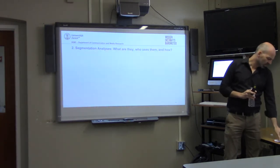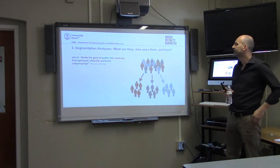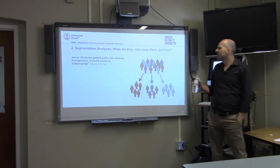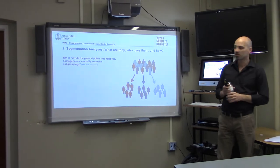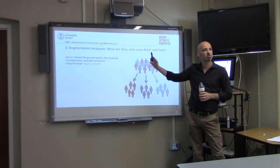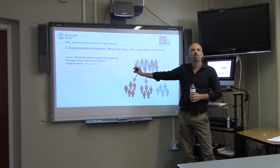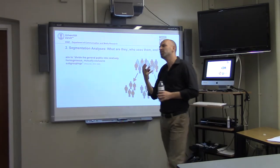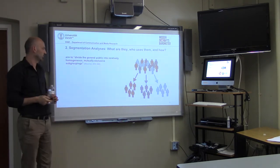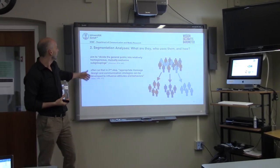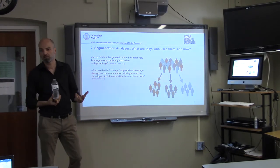The approach we used to answer that is segmentation analysis — an analysis that aims to divide the general public into relatively homogenous, mutually exclusive subgroupings. You have a population with certain attitudes towards science and you try to figure out whether there are typical segments that are homogenous in how they see science. Often this is done so that, in a second step, appropriate message designs and communication strategies can be developed to influence attitudes and behaviors.